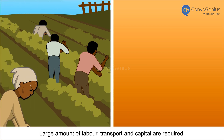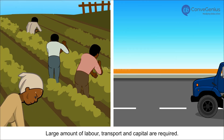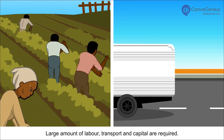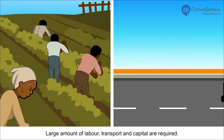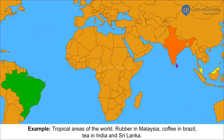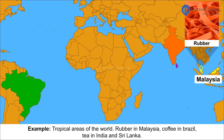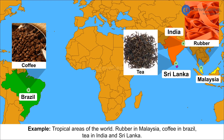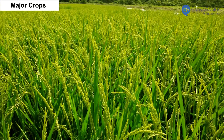Large amounts of labour, transport and capital are required. Examples from tropical areas of the world include rubber in Malaysia, coffee in Brazil, and tea in India and Sri Lanka.